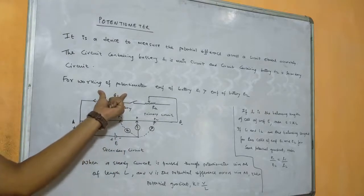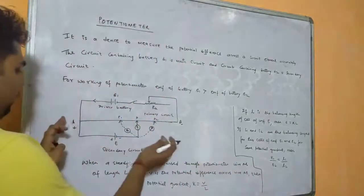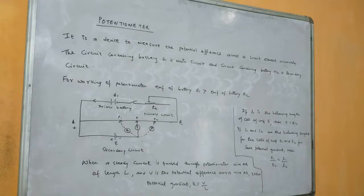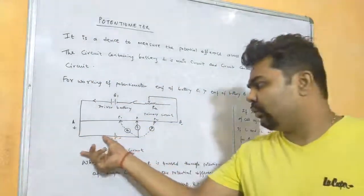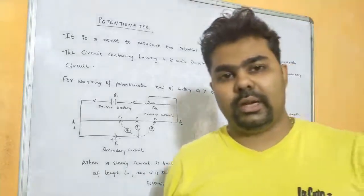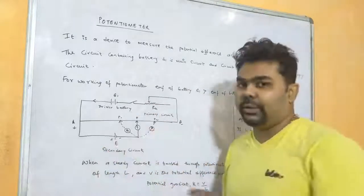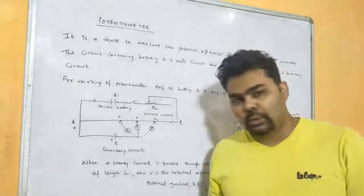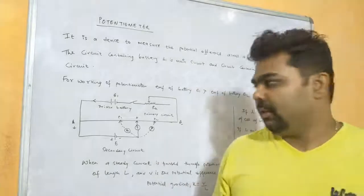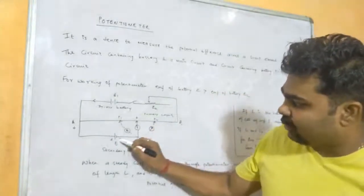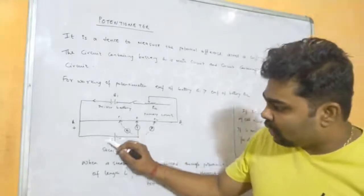We compare our EMF with a standard EMF. To find the potential difference between points A and B, we calculate E and D1. We can compare the EMF of two cells using the potentiometer — for example, comparing a used battery with a new one to determine which has more EMF. Such practicals are also performed in the lab.